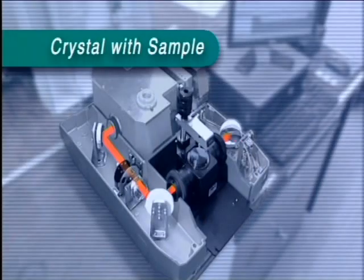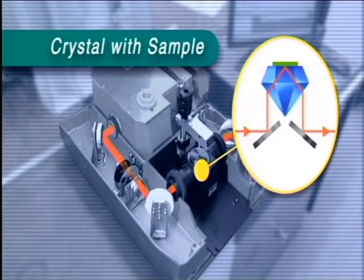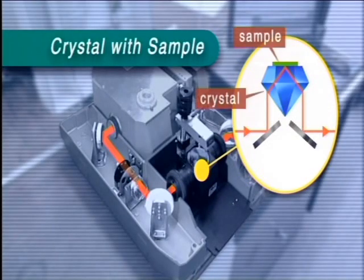This is the sample holder. The sample is placed here on a crystal which is made of diamond or germanium. The IR beam is directed into the sample by a mirror. It is reflected back from the upper surface of the sample before being guided into the detector by a second mirror. This method is called attenuated total reflection, or ATR.